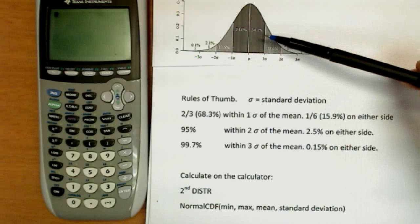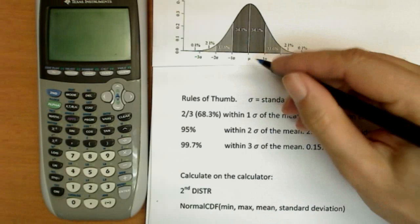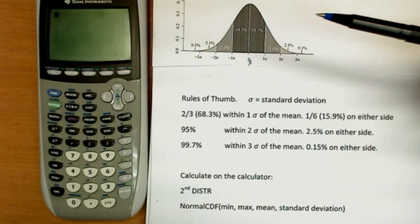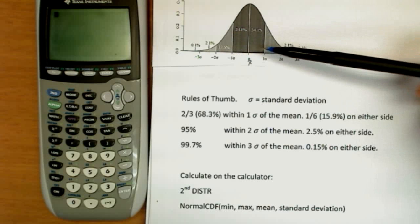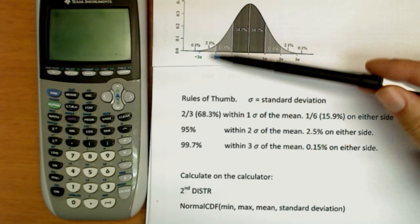So here's a representative normal distribution. This is its average. In statistics commonly called μ, on our calculator it's going to be x̄. And this is one sigma, and this is minus one sigma. So within one sigma, either way, this dark area here represents two-thirds of the population.